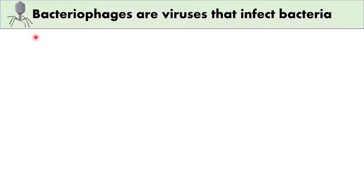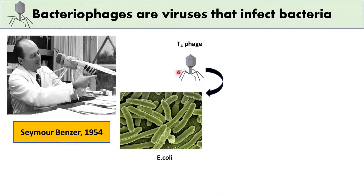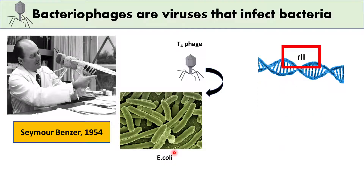Bacteriophages are viruses that infect bacteria. In 1954, Seymour Benzer worked on the complementation test in bacteriophages. He chose T4 phage, which infects E. coli. Among different genes of the phage chromosome, one was rII, which was selected for the complementation test.